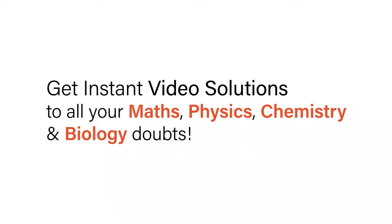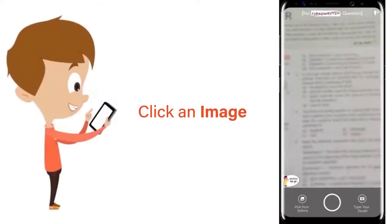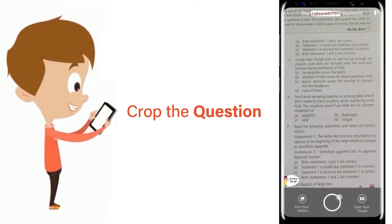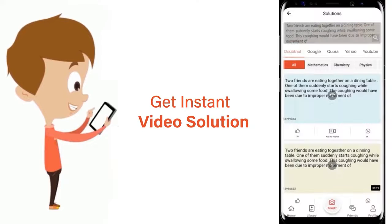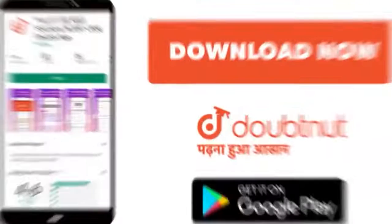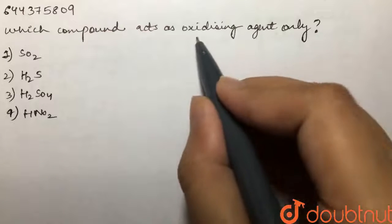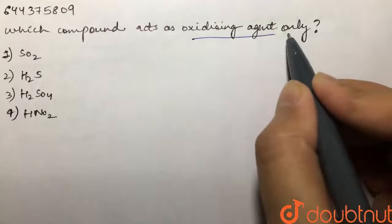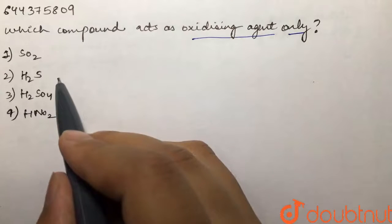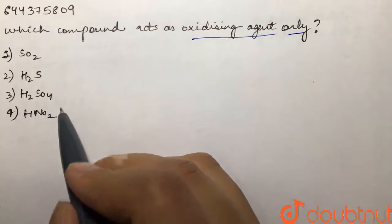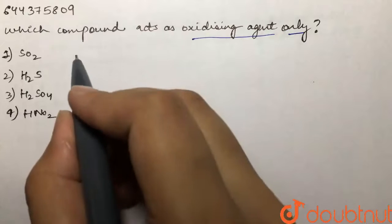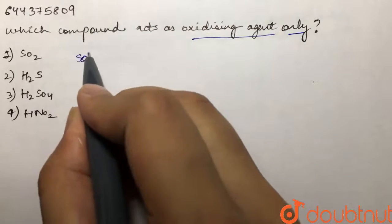With DoubtNut, get instant video solutions to all your maths, physics, chemistry, and biology doubts. Just click the image of the question, crop it, and get an instant video solution. Download the DoubtNut app today. Our question is: which compound acts as oxidizing agent only? SO₂, H₂S, H₂SO₄, or HNO₂?